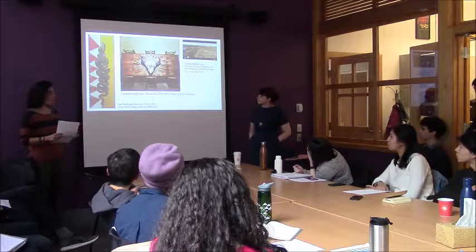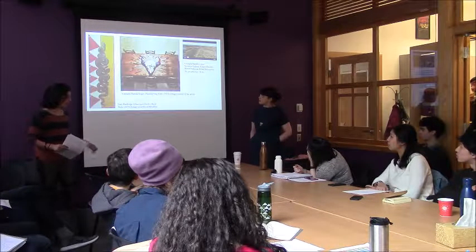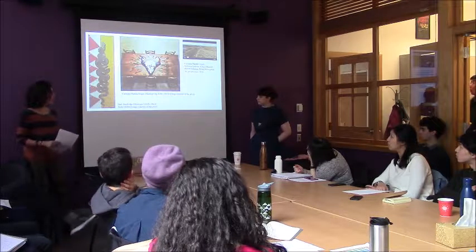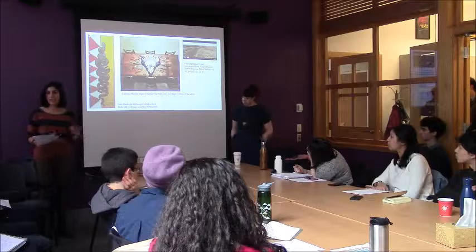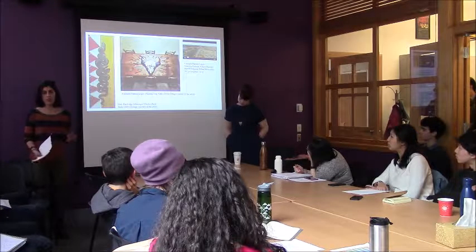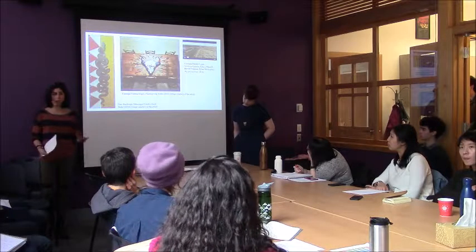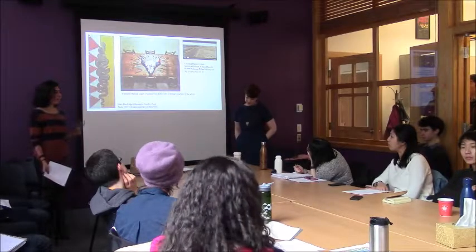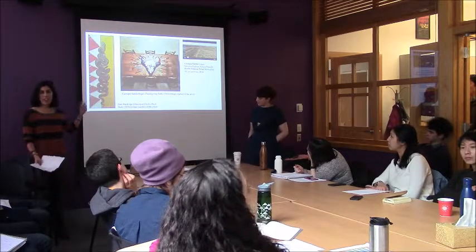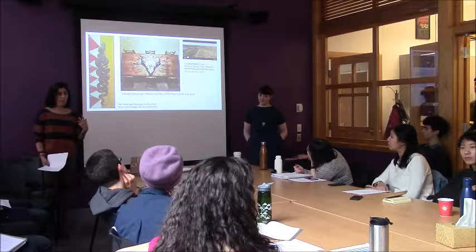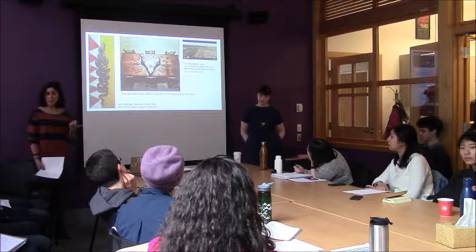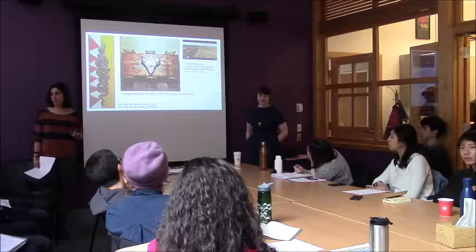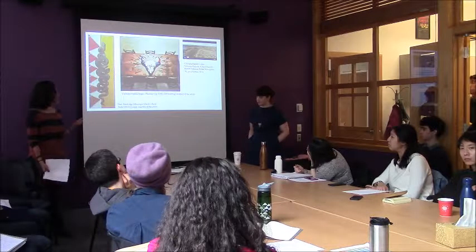Maybe we should just talk about all of the contemporary images we've touched on, in order to ask how we start to connect them to these histories of images that we laid out. How do we start to think about their interventions in relation to these histories of different types of pictorial representation, collecting, the rhetoric of nature and nation? Thoughts, ideas? We have about five minutes.